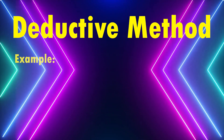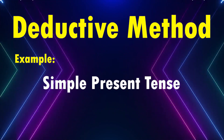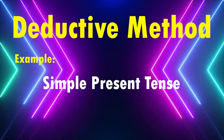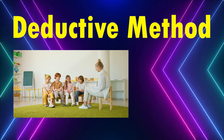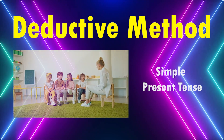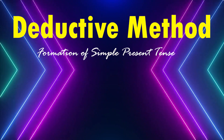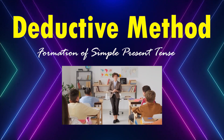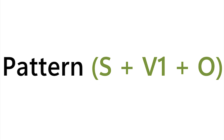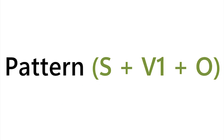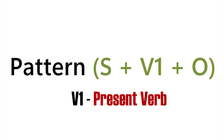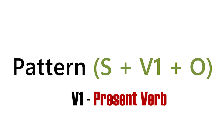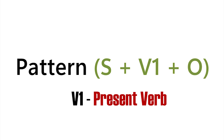For example, we have taken the topic simple present tense. According to this method, the mentor clearly explains what simple present tense is, and the formation of simple present tense is also clearly explained. The simple present tense rules are: Rule 1 — it follows the pattern of subject plus verb 1 (present verb) plus object, and if it is a statement, it should end with a full stop.